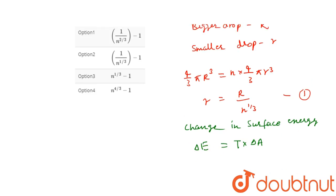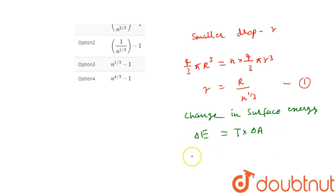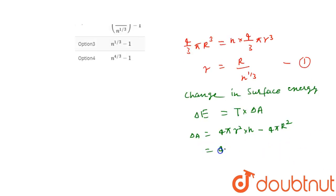Work done for smaller drops, so delta A will be equal to 4 pi r square into n minus 4 pi R square. Then we will take 4 pi common, substitute the r value as R divided by n to the power 1 by 3.